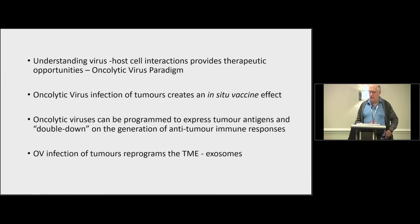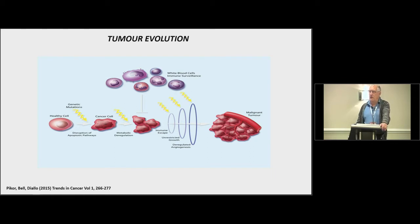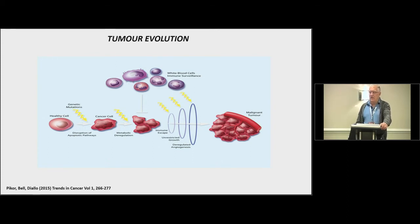Why are these oncolytic viruses working and what's the selectivity involved? Taking a step back to think about tumor evolution: when a tumor evolves, it starts with a healthy cell, requires epigenetic or genetic mutations leading to a fully malignant tumor. Things we're very familiar with now include changes in apoptotic programs, changes in metabolism, and finding ways to escape immune recognition. These all happen when a tumor evolves from a normal cell to a malignant cell.